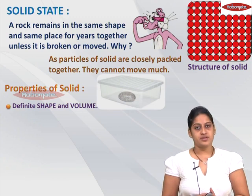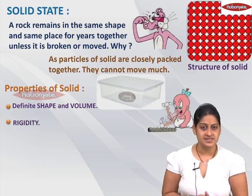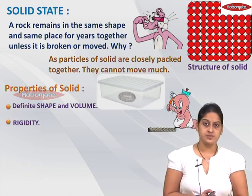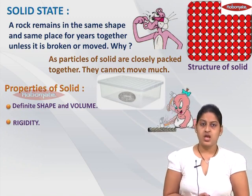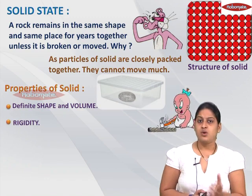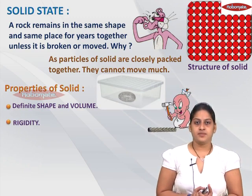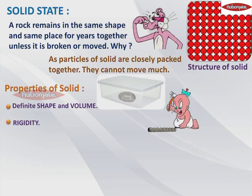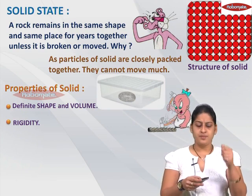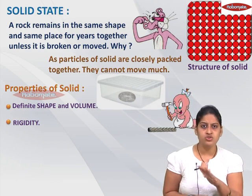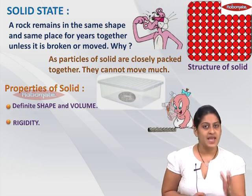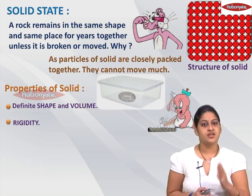The second property is that solids are either rigid or elastic. When I say rigidity — some solids do not change their shape even when external pressure is applied. If you put pressure on them and they don't change their shape, then the solids are said to be rigid, and this property is known as rigidity.